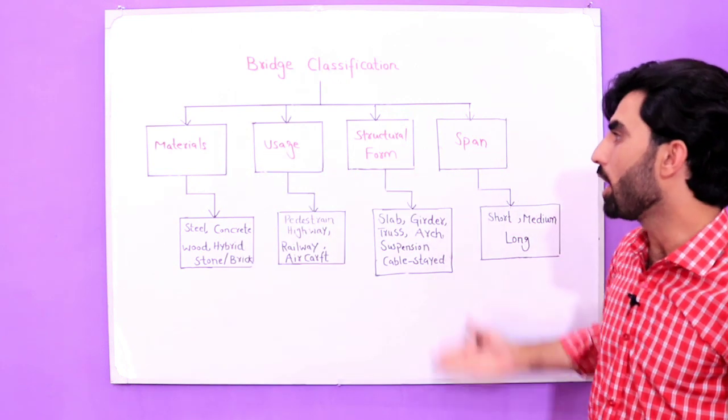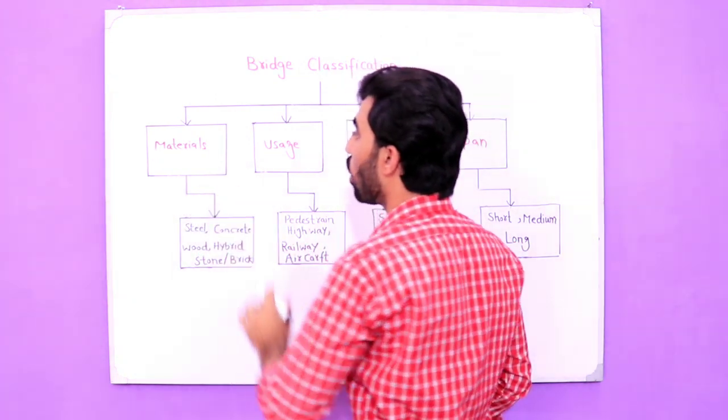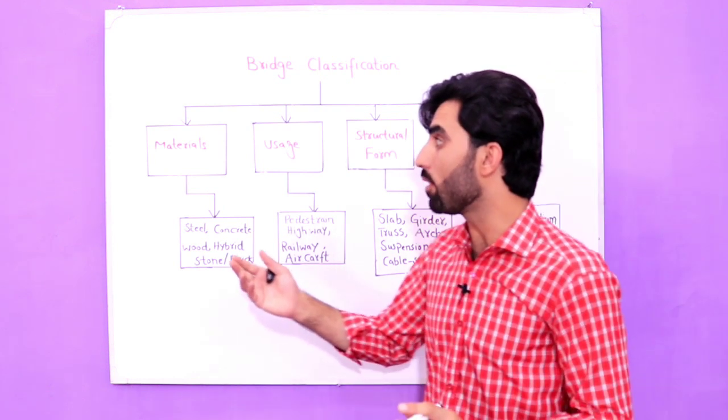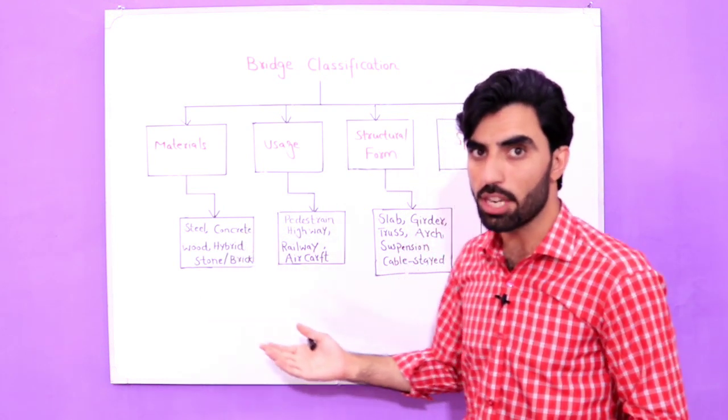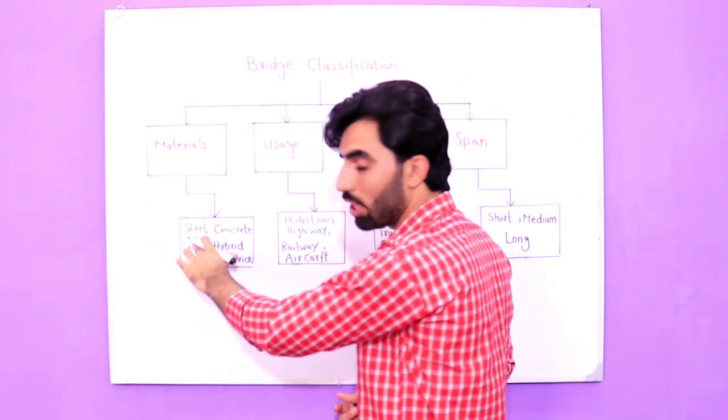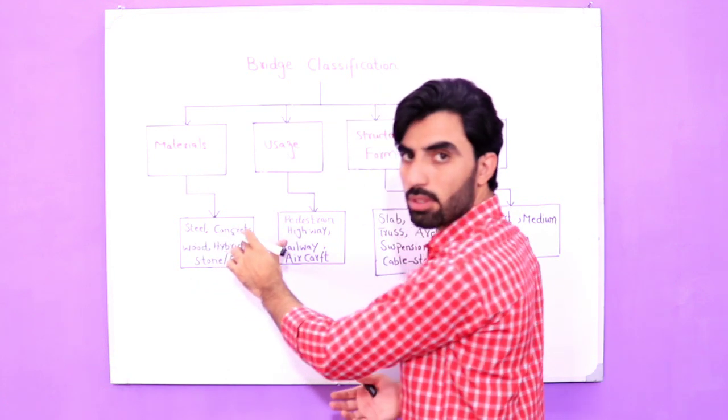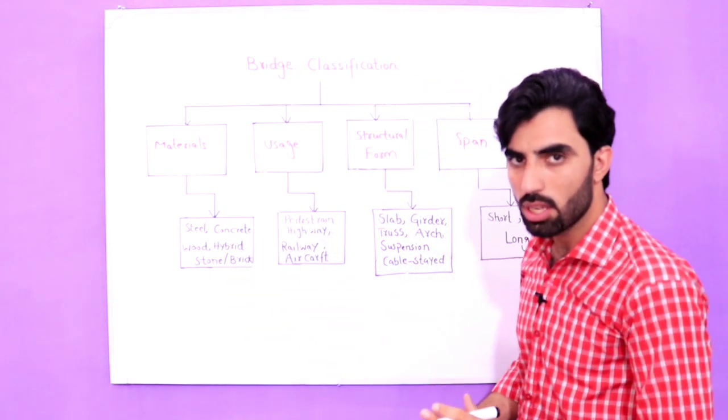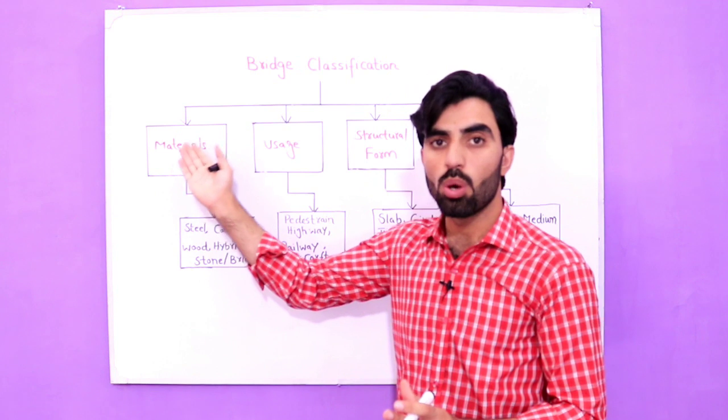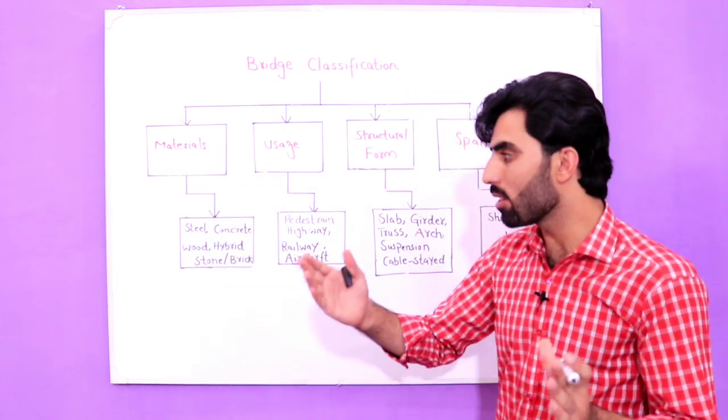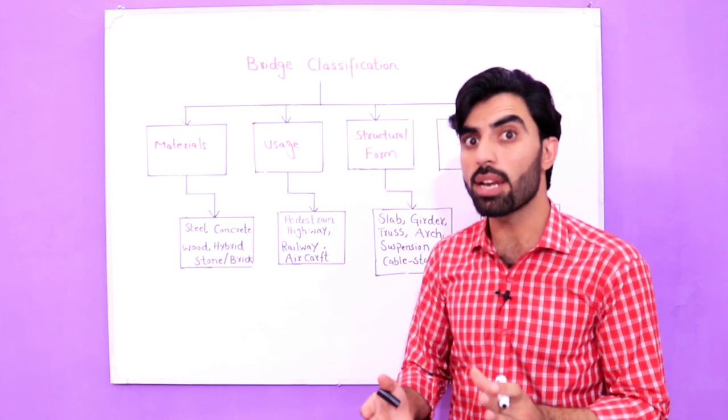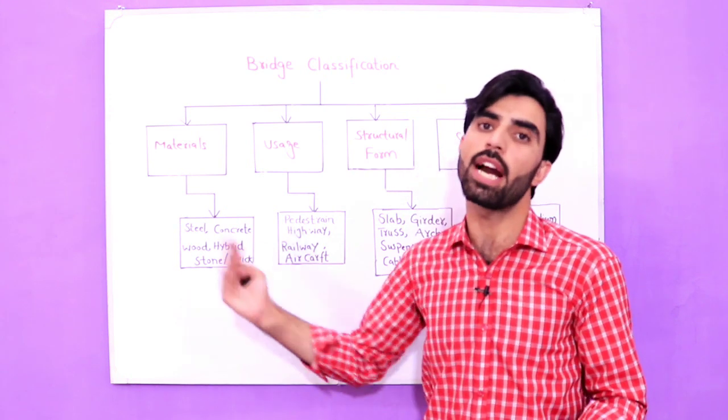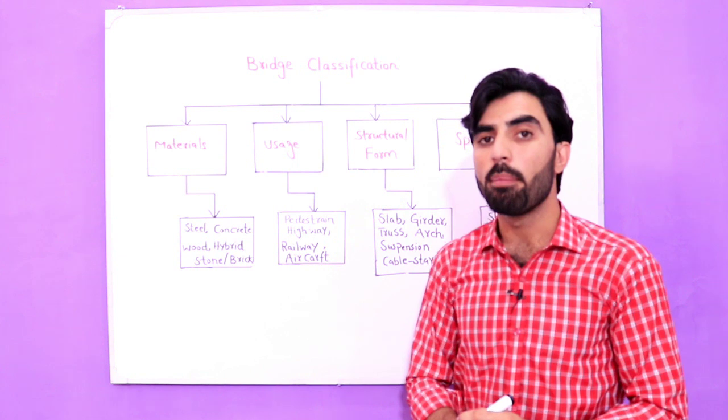First is materials. In bridge we have different materials according to its classification. Steel bridge, RCC bridge, concrete, also wood, hybrid, stone, and masonry. These are related materials with bridge by which you can make a bridge or you can do the construction of bridge.